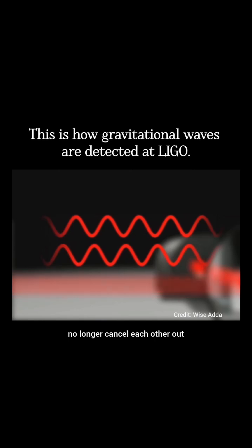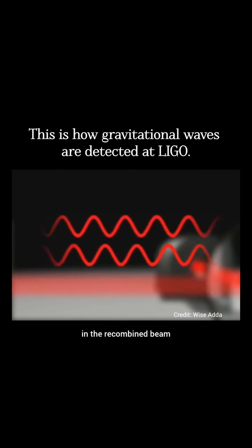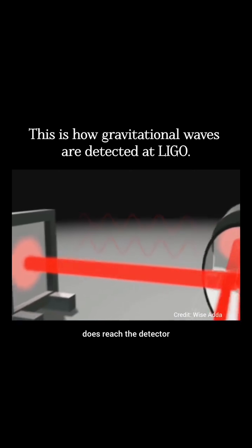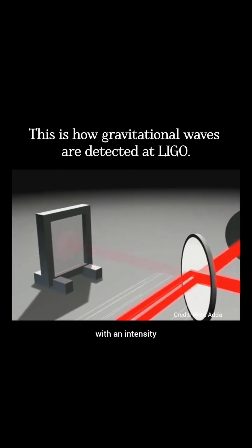And the light waves no longer cancel each other out when added together in the recombined beam. Now some light does reach the detector with an intensity that varies as the distance between the mirrors varies.